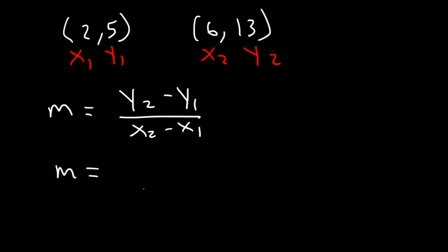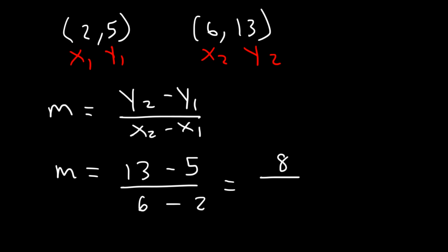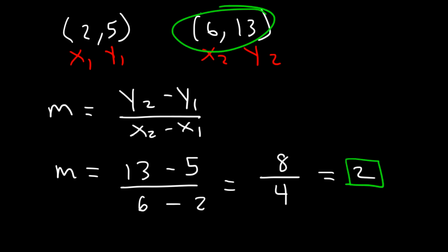Now we define y2 to be 13 and y1 is 5. x2 is 6, x1 is 2. 13 minus 5 is equal to 8, and 6 minus 2 is equal to 4. Now we've got to reduce it. 8 divided by 4 is equal to 2. So 2 is the slope between these two points, and that's how you can find it.